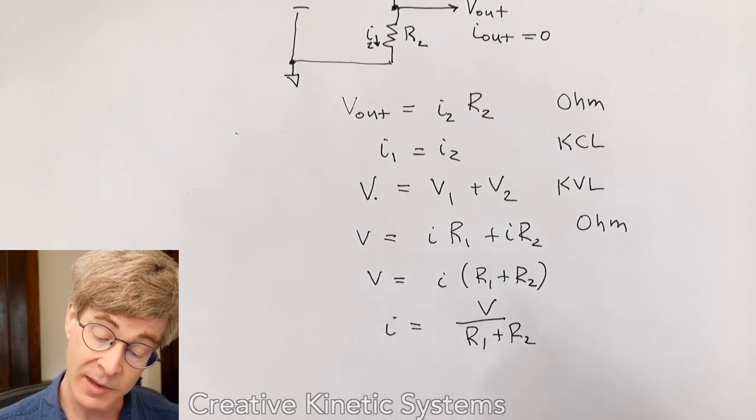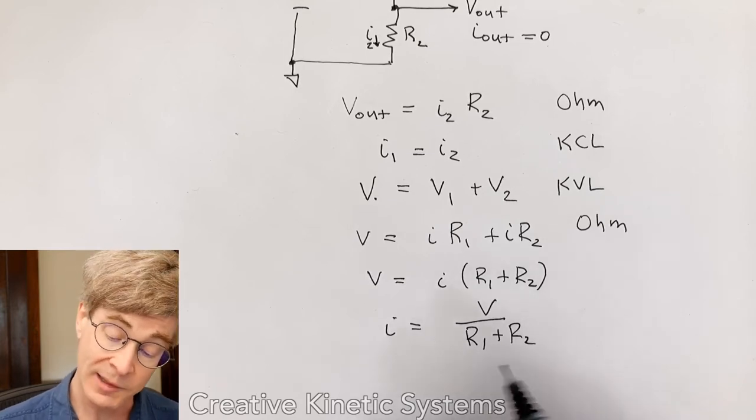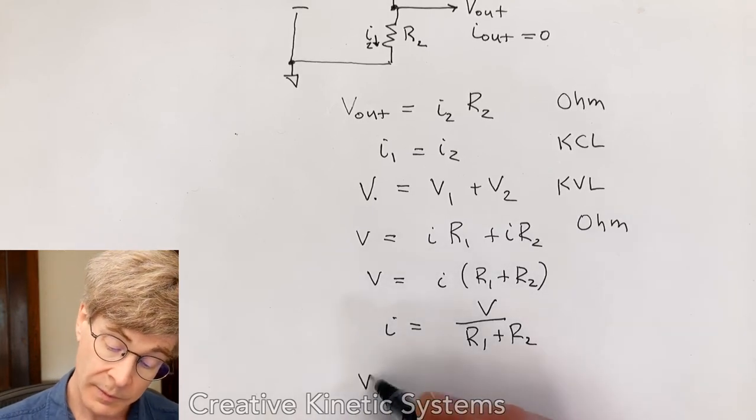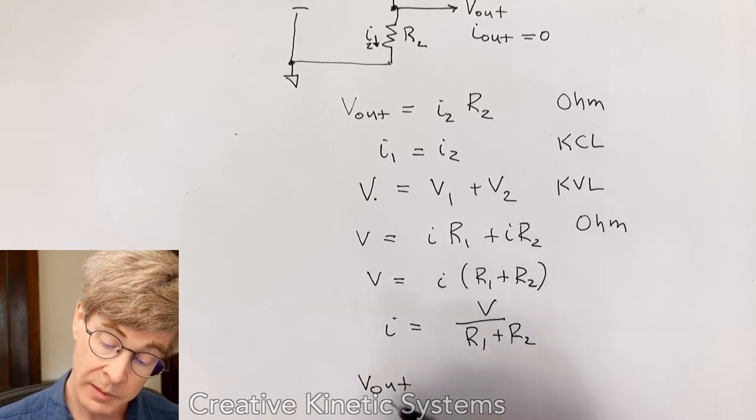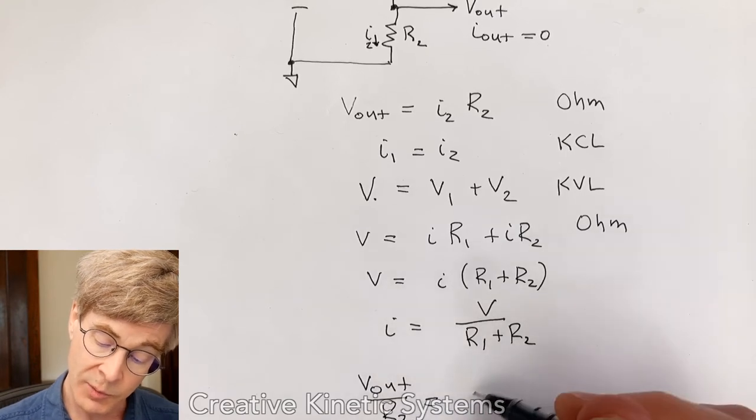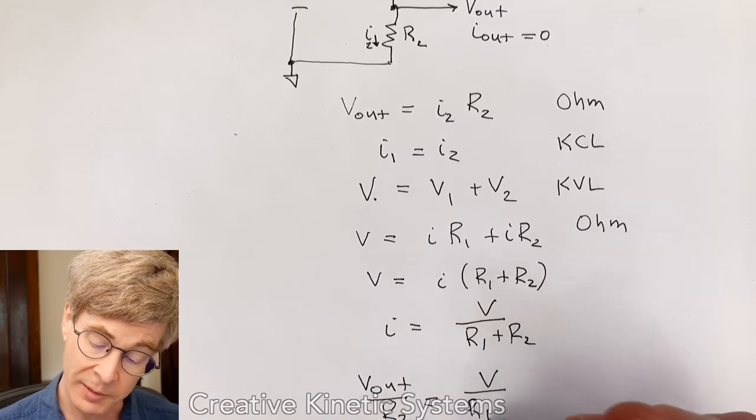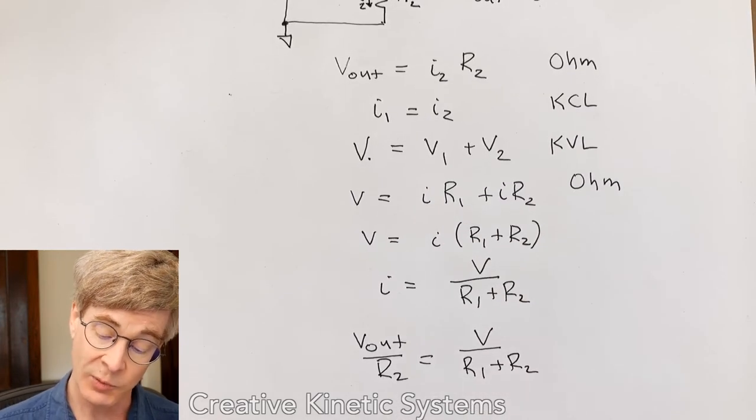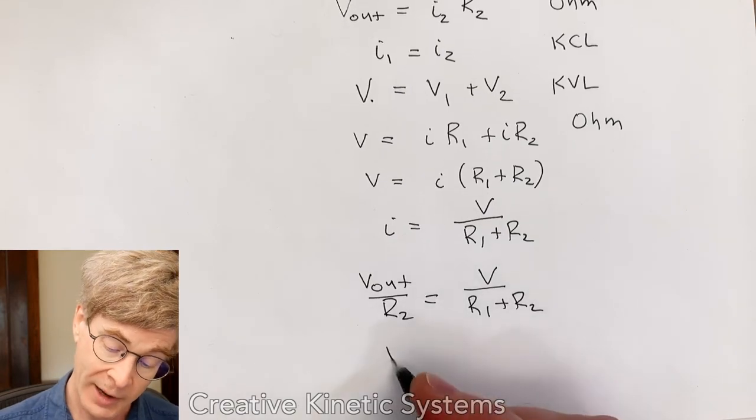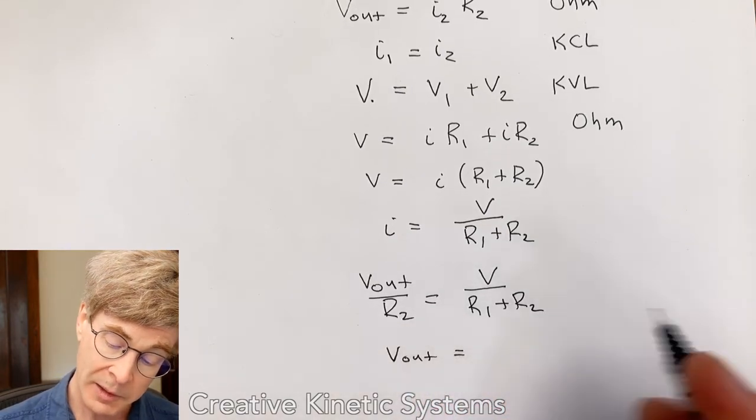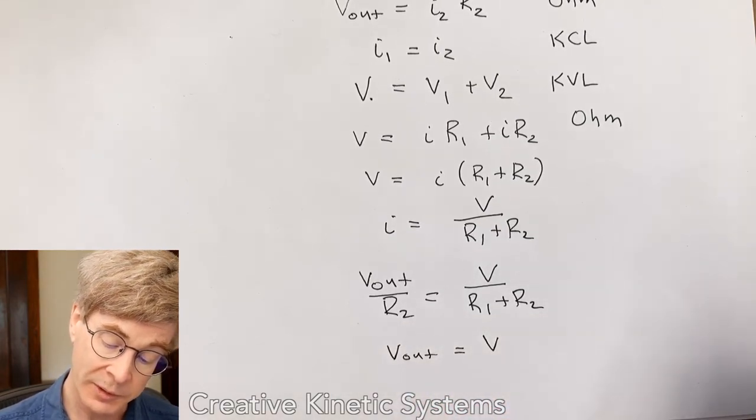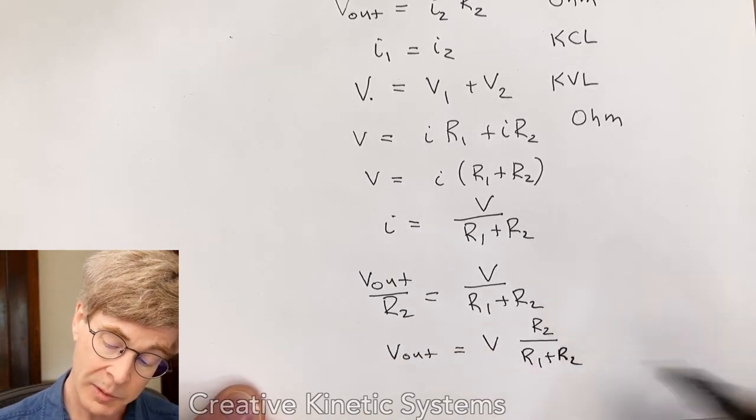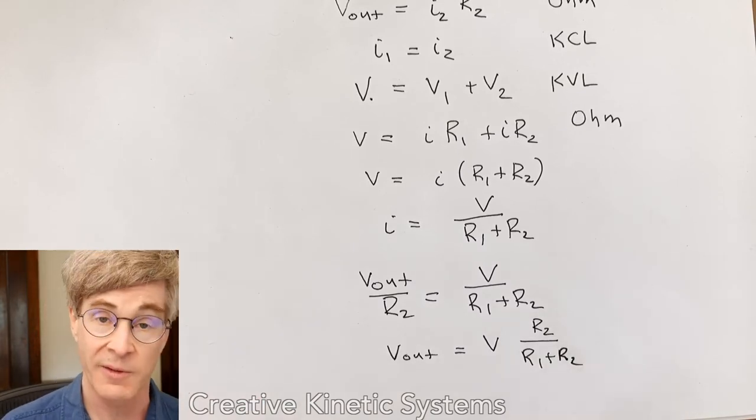I get that I is equal to Vout divided by R2 equals now V over R1 plus R2. And at this point, I can simply do one final algebraic rewrite to move the R2 over and I get Vout equals the source voltage V times R2 over R1 plus R2. And this is our basic expression for this kind of voltage divider.